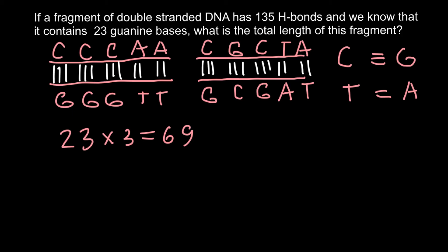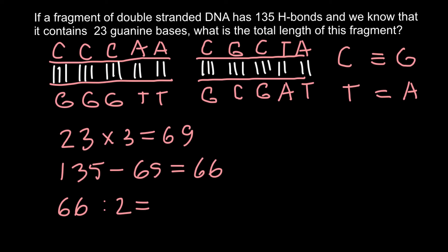The total number of hydrogen bonds in this fragment is 135. We subtract 69 from 135, leaving 66 hydrogen bonds for thymine-adenine base pairs. Since thymine and adenine have a double bond, we divide 66 by 2, giving us 33 thymine-adenine base pairs. We also have 23 cytosine-guanine base pairs.